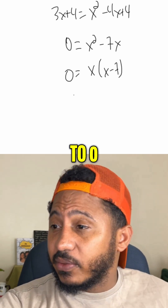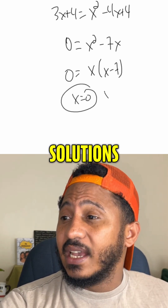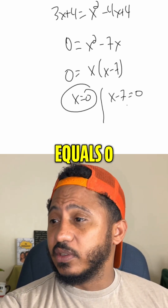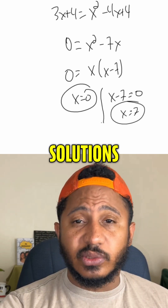Setting each factor equal to 0: x equals 0, that's one of my solutions. And x minus 7 equals 0, so x equals 7. So those would be my two solutions.